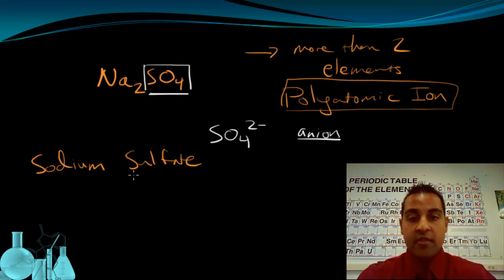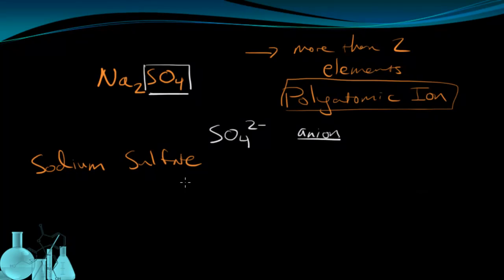If you recall from the last video, the name of the polyatomic group never changes in a compound. So SO4 2- is a sulfate ion, and we just use that name, sulfate, in our compound. Now in this case, the polyatomic served as the anion. You can have a case where the polyatomic is a cation, such as when we have the ammonium ion, NH4+. This is a very common polyatomic that serves as a cation. So it's worth remembering the NH4+ ion.